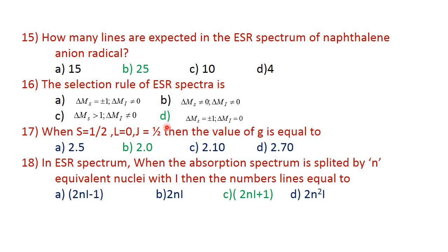Question 15: when S=1/2, L=0, J=1/2, the value of g equals approximately 2. Question 18: in ESR spectrum, when the absorption is split by N equivalent nuclei each with spin I, the number of lines is given by the formula 2NI+1, where N is the neighboring nucleus and I is the spin of the nucleus. C is the correct answer.